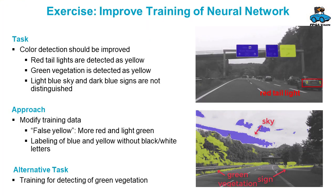As an exercise, you can improve the training of the neural network. In the lecture videos you saw that the results of the training are good but not perfect. Red taillights of cars are detected as yellow. Also, bright green vegetation is detected as yellow, and this can be improved. Also, the sky is sometimes detected as a blue road sign.